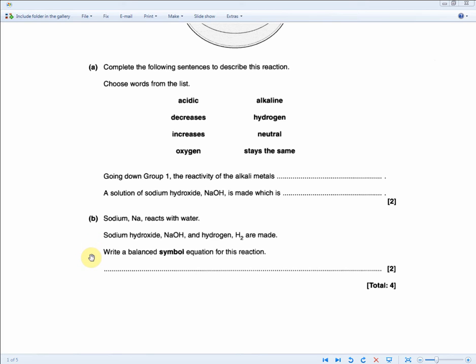Sodium hydroxide NaOH and hydrogen H2 are made. Write a balanced symbol equation for this reaction. You get two marks for this. You need to identify where the two marks are coming from. One mark for writing the symbol equation and one mark for balancing the symbol equation.